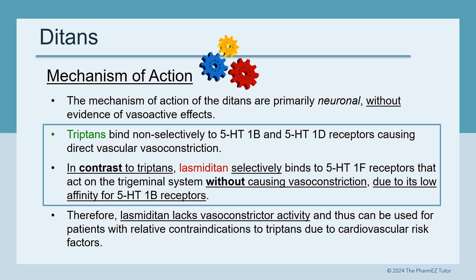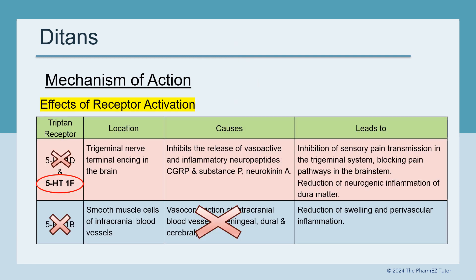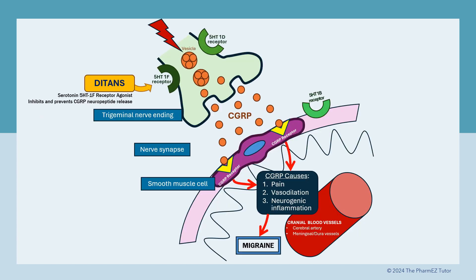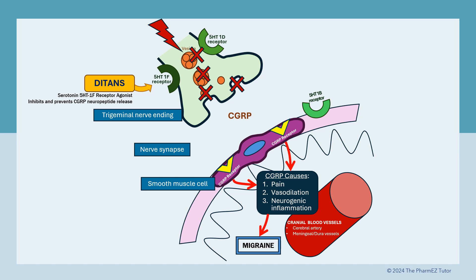Therefore, Lasmiditan lacks vasoconstrictor activity and can be used for patients with relative contraindications to triptans due to cardiovascular risk factors. By working just on the 5-HT1F receptors and not on the 5-HT1B, the DITANs avoid causing any vasoconstriction — and the 5-HT1F effects are similar to the 5-HT1D receptor effects. You can locate where the DITANs work, in the orange-colored rectangle, at the 5-HT1F receptor on the nerve ending. DITANs bind to 5-HT1F receptors, inhibiting the release of vasoactive peptides, thus preventing CGRP from causing pain, vasodilation, and inflammation. Note that DITANs do not activate the 5-HT1B receptors, so no vasoconstriction occurs.